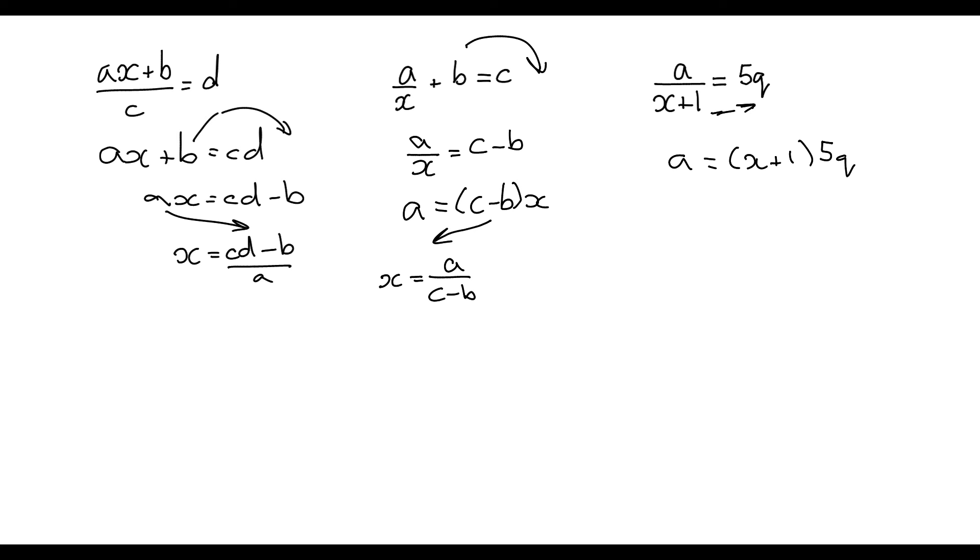The x is within a bracket so the rule that we're following is to multiply out that bracket. So we're going to get 5qx plus 5q. So we're going to take this term to the other side. So we have a minus 5q equals 5qx. And now we're going to divide by this part to split the term up. So we have a minus 5q over 5q equals x. But we want the x equals on this side.